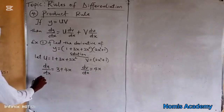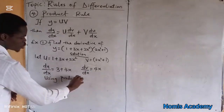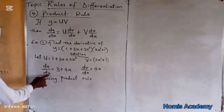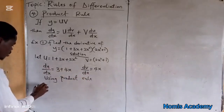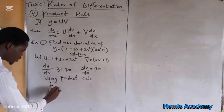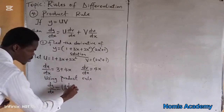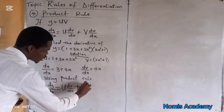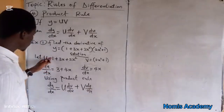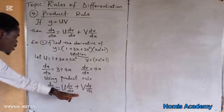So now we have u, v, du over dx and dv over dx. Using the product rule, which states that dy over dx is equal to u times dv over dx plus v times du over dx. We are going to substitute these four things into the formula.